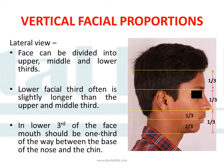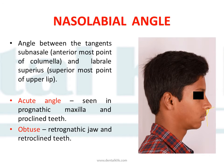Regarding vertical facial proportions, when examined in the lateral view, the face can be divided into upper, middle, and lower thirds. The lower facial third is often slightly longer than the upper and middle thirds. When examining the lower third of the face, the mouth should be one-third of the way between the base of the nose and the chin. These are the normal facial proportions.